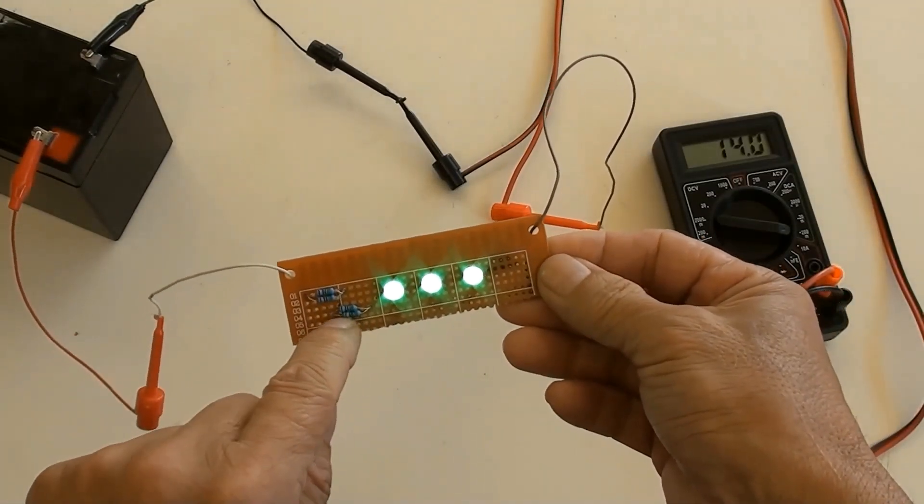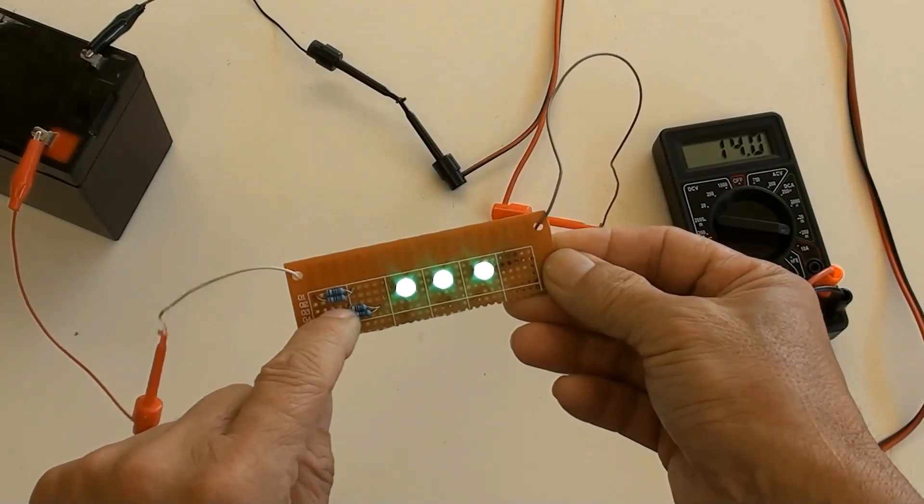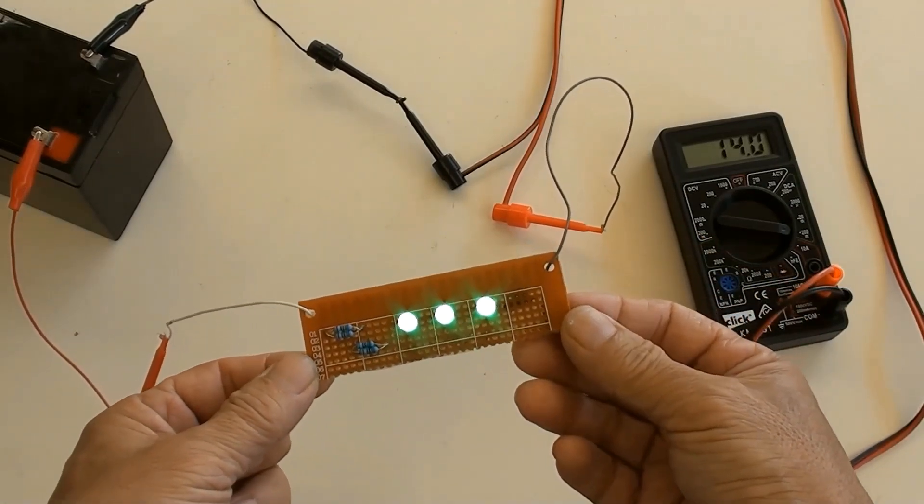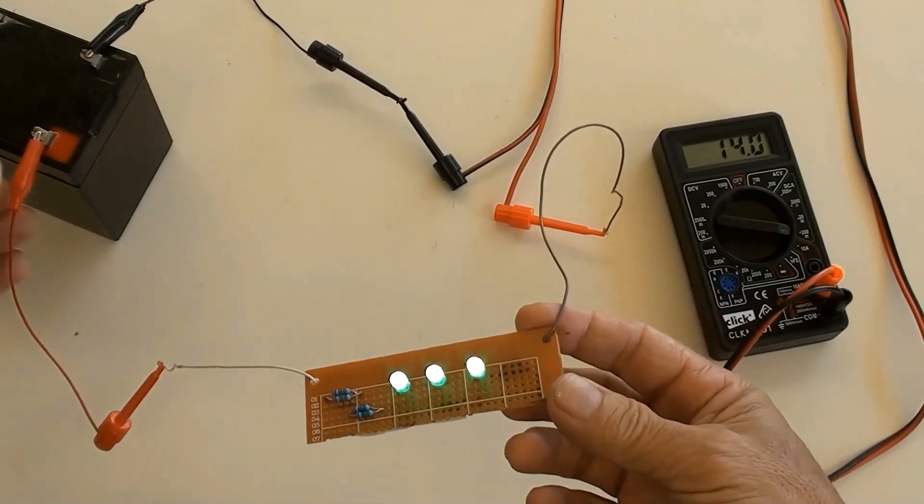This DIY resistor has a watt of dissipation capacity, and the circuit's current of 14 milliamperes is well within the range desired.